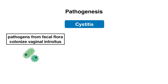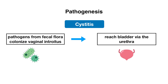So how do urinary tract infections occur? This happens when pathogens from fecal flora colonize the vaginal introitus, and then these pathogens reach the bladder via the urethra. This is why women are at higher risk of having urinary tract infections than men, mainly because the urethra is much shorter.